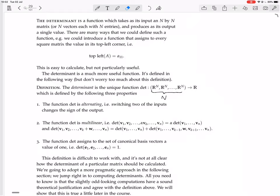And also, it assigns to the set of canonical basis vectors - e1, e2 to eN, where eI is that vector which has zeros everywhere but one on the i-th row - a value of one. The determinant of these canonical basis vectors is one. But this definition is difficult to work with.